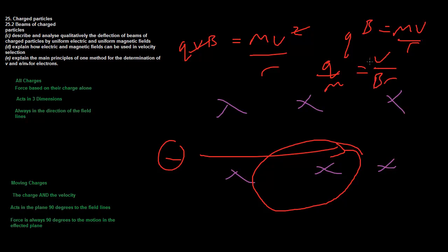Rearranging gives q over m equals v over Br. If we know the velocity from prior velocity selection, we can find the charge-to-mass ratio. If we know the charge we can find the mass, and vice versa. If we already know q/m, we can determine the velocity, since B is applied by us and r can be measured from the circular path.